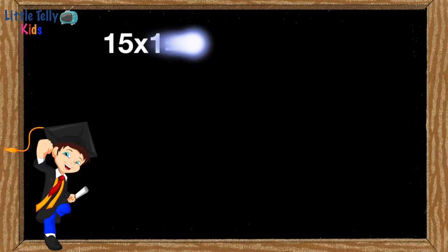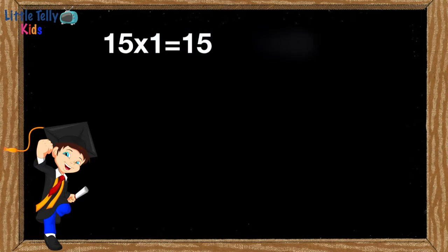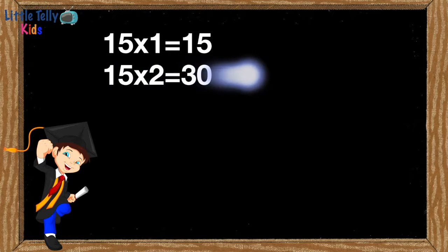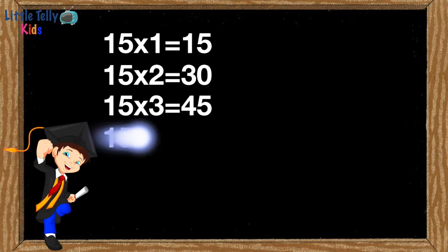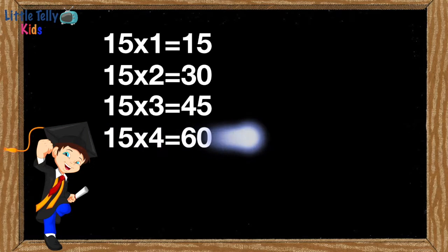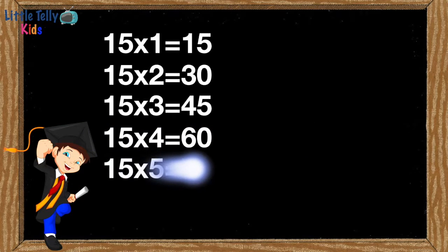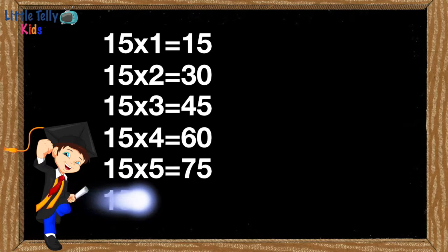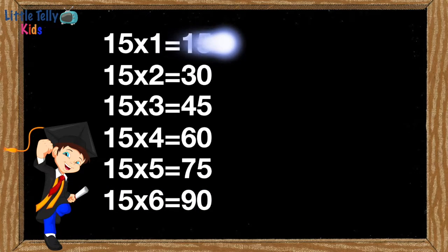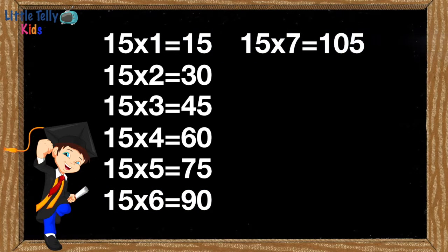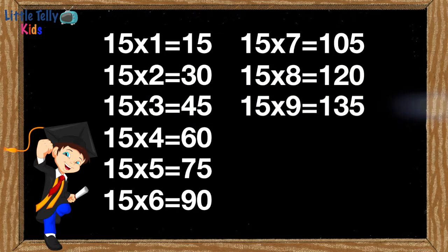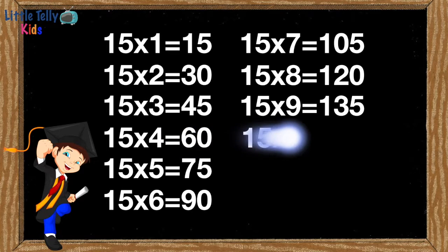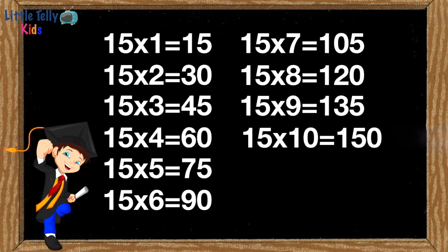15 1's are 15. 15 2's are 30. 15 3's are 45. 15 4's are 60. 15 5's are 75. 15 6's are 90. 15 7's are 105. 15 8's are 120. 15 9's are 135. 15 10's are 150.